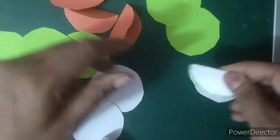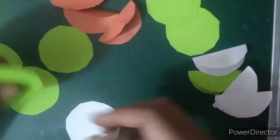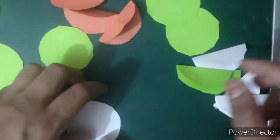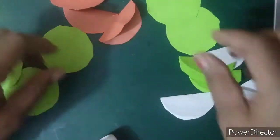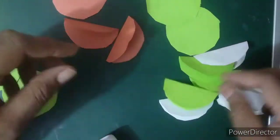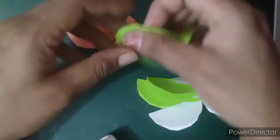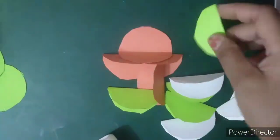So you can see we are folding all the white, green and orange sheets. Now I will fold all the sheets.